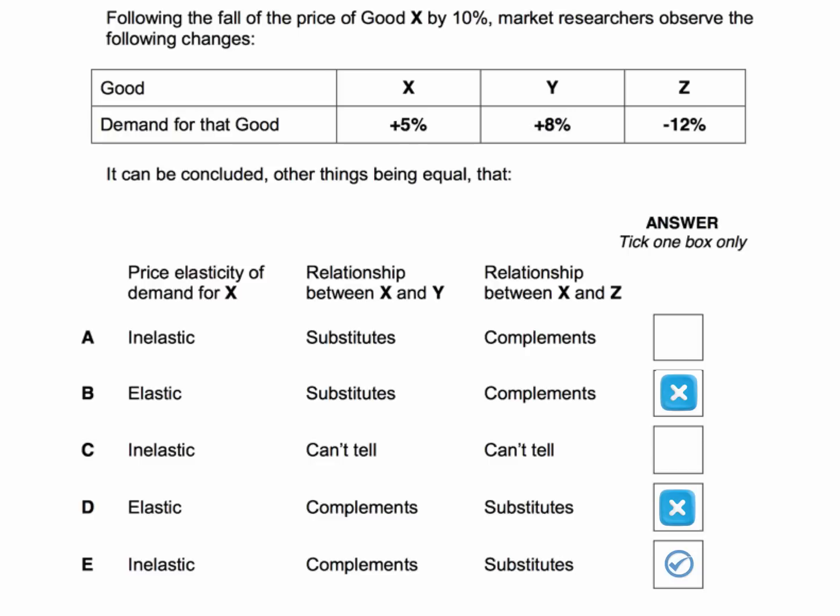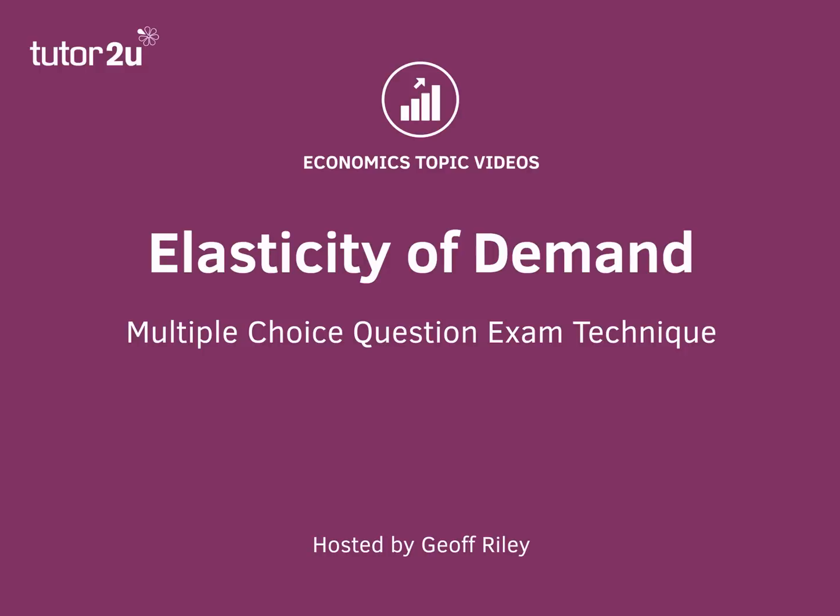We know that Z is a substitute because when the price of X falls by 10%, the demand for Z, a substitute, falls by 12%. We've already worked out the answer — the other two answers cannot be right. So that's the multiple choice question on elasticity of demand.